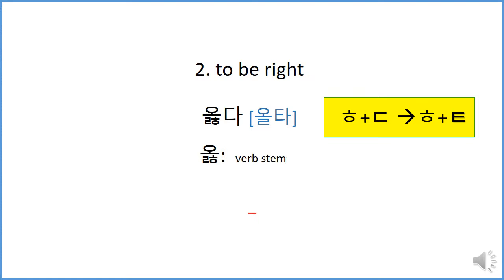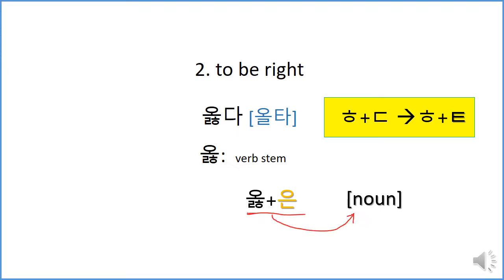To conjugate, we remove 다. And this is the verb stem. And we add ㄴ for the descriptive verb, to be able to modify the following noun or pronoun. 오른.